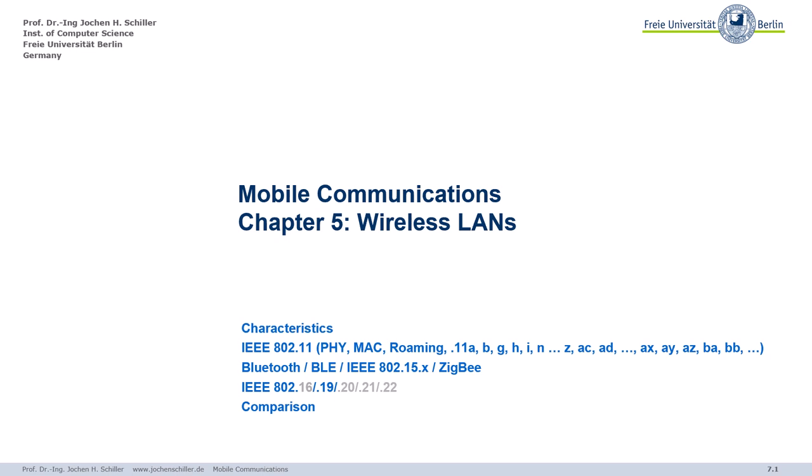Welcome to chapter 5 of mobile communications. In this chapter, I will mainly cover wireless communication systems that operate in so-called license-free or license-exempt bands. That means everyone — you and I — can simply install and operate those networks. This is not allowed in the big mobile phone systems, where you have certain operators, but here everyone can set up a network.